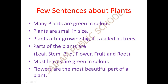Most of the leaves are green in color. The flowers are the most beautiful part of the plant. Once again: many plants are green in color; plants are small in size; plants after growing big are called as trees. Parts of the plants: leaf, stem, bud, flower, fruit, and root. Most leaves are also green. Fruits are very tasty and flowers are the most beautiful part of the plant.